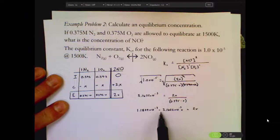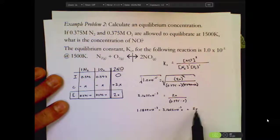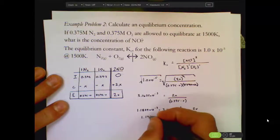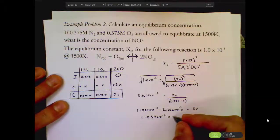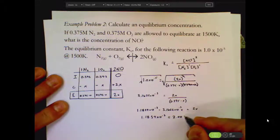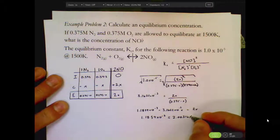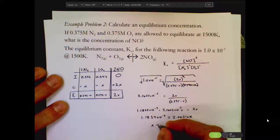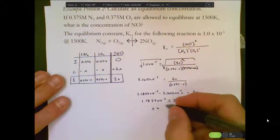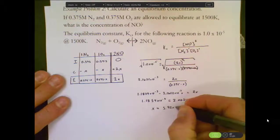Then I need to combine like terms, so I'm going to add the 3.1622 times 10 to the negative 3rd to the 2X, and that's going to give me the result of 1.1859 times 10 to the negative 3rd being equal to 2.00316X. Then I can solve for my X value here, which is going to give me 5.92 times 10 to the negative 4th.